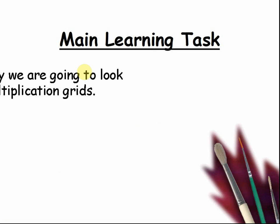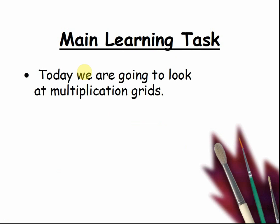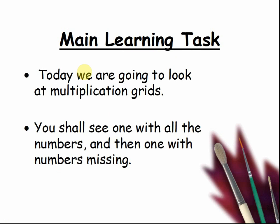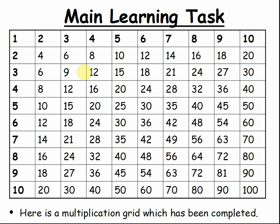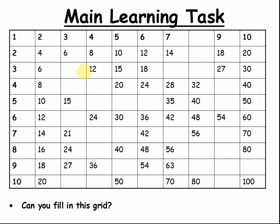Main learning task. Today we're going to look at multiplication grids. You shall see one with all the numbers and then one with numbers missing. Here is a multiplication grid which has been completed — look at the different patterns you can see in this grid. Pause the video to see how many different patterns you can see in the data. Now I'm going to remove some numbers and see if you can work out what is missing. Can you fill in this grid? Pause the video and have a try. You will need to look for patterns in the numbers.